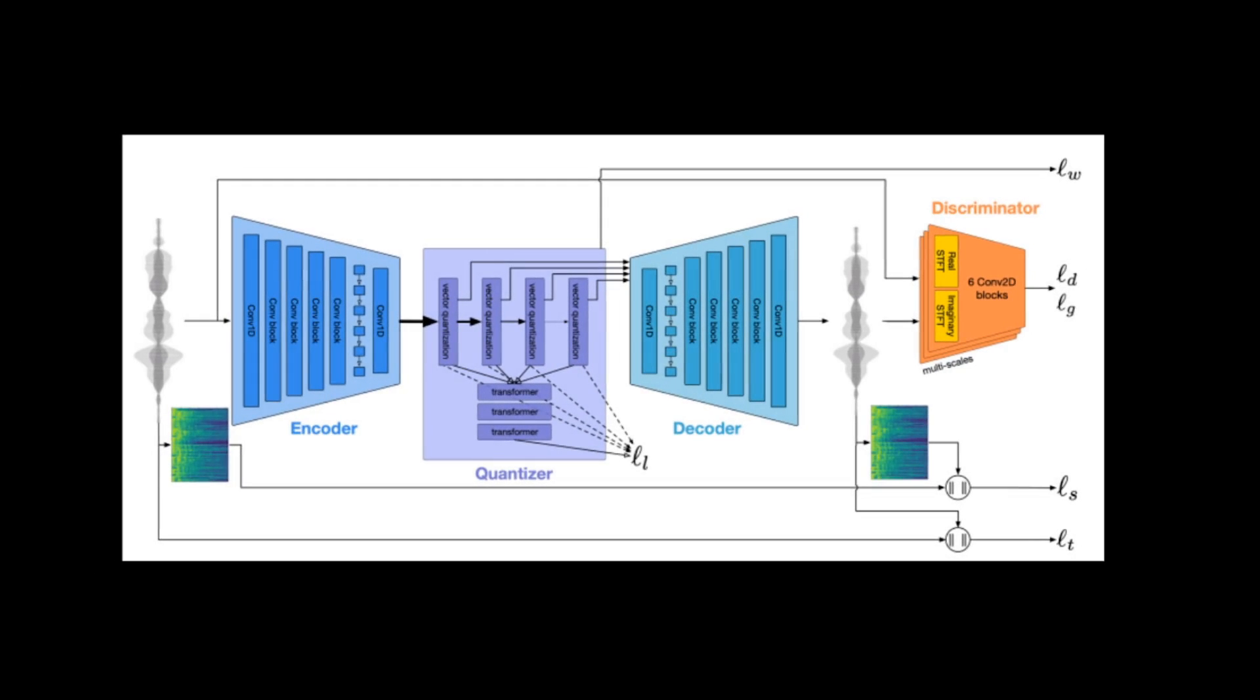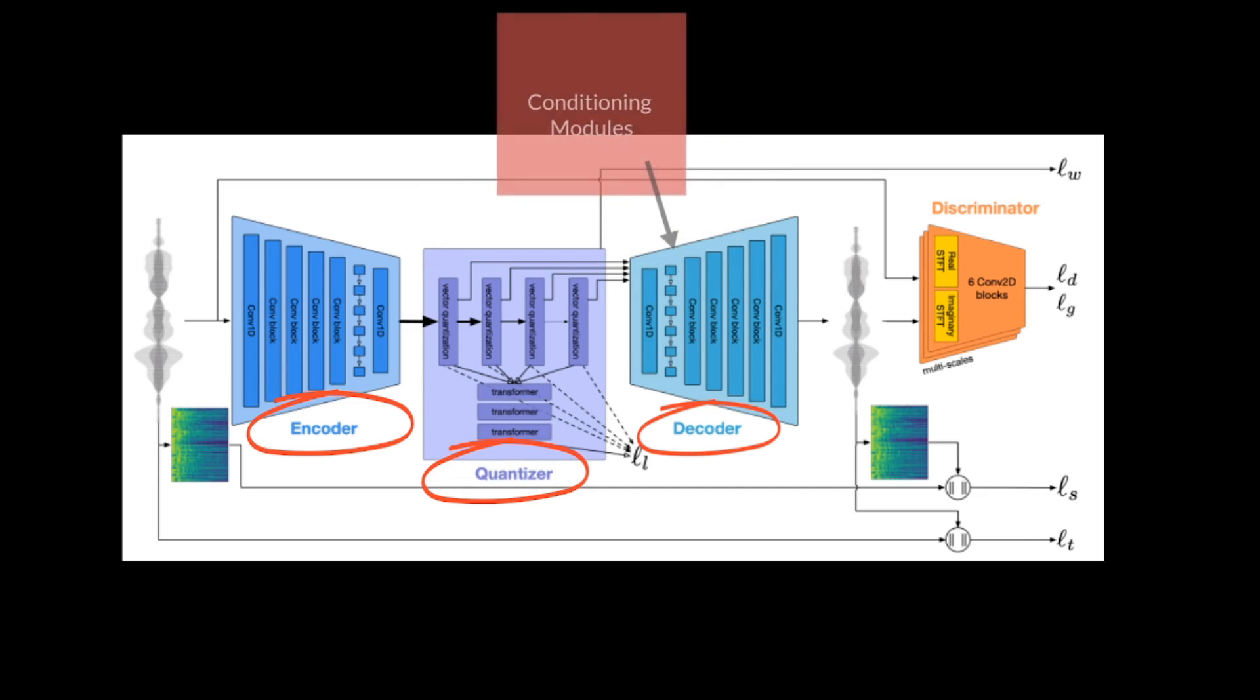The architecture is built on top of the encodec project proposed again by Meta in late 2022. The architecture still has an encoder, quantizer and a decoder. However, they have introduced conditioning modules to handle text and melody inputs for conditioning. In this video, I'm going to dive deeper into Music Gen architecture, starting from vector quantization, the decoder and the conditioning modules that are integrated with the decoder.